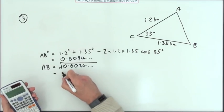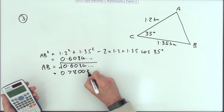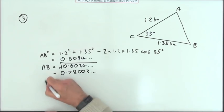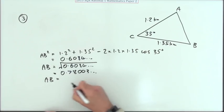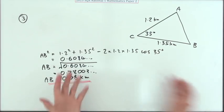Square root of answer is finally 0.78003 et cetera. So what will we round it off to? It doesn't actually say in the question, so we'll just make it 0.78 kilometers. There we go then. There's another three marks please.